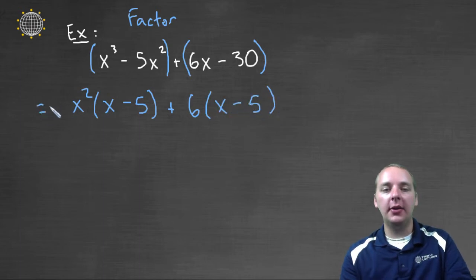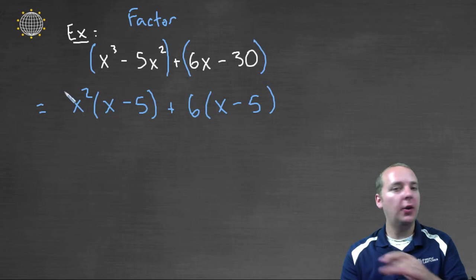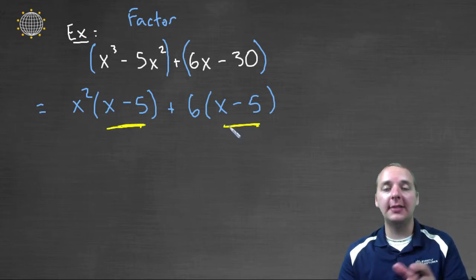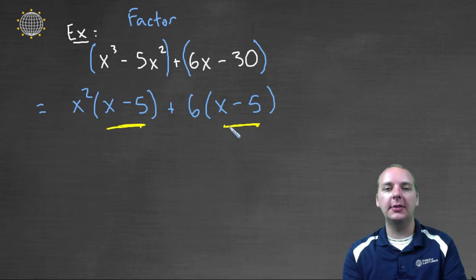Now we're not done here, a lot of students will stop right here, but this isn't factored still because we still have addition right here. The whole thing needs to be a product. But what I do notice is that the first group has an x minus 5, and the second group also has a packet, a group of x minus 5.